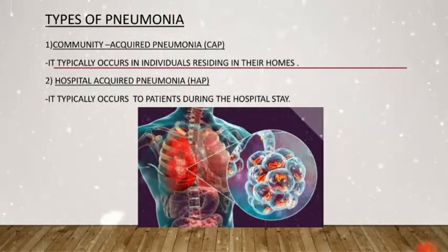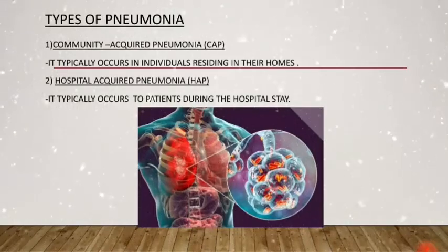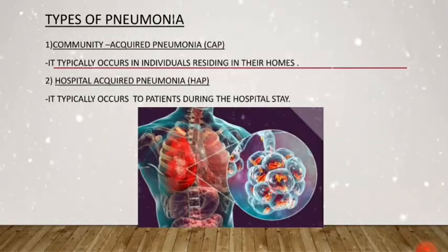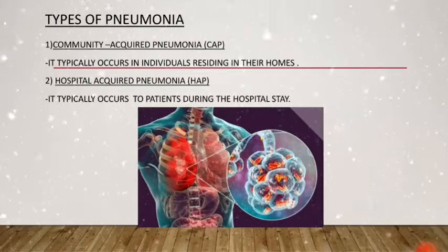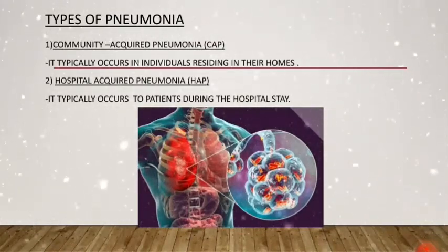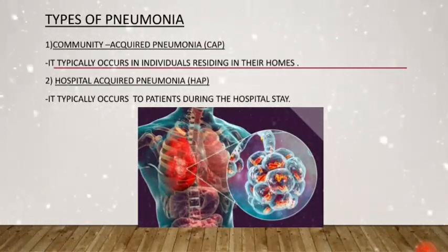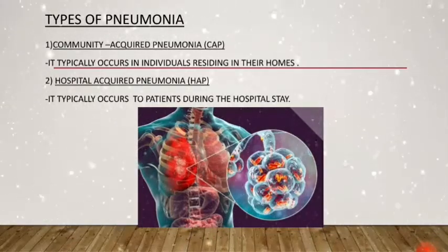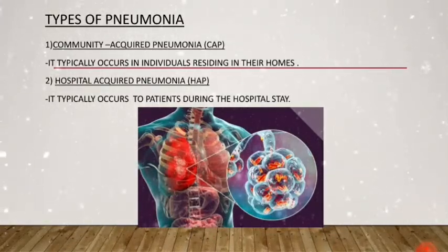Pneumonia is of two types: community-acquired pneumonia and hospital-acquired pneumonia. Community-acquired pneumonia typically occurs in an individual residing in their home, whereas hospital-acquired pneumonia occurs in a patient during their hospital stay.